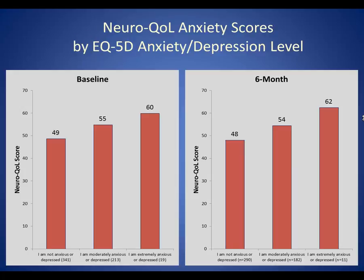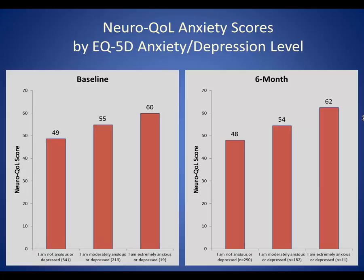Another way to examine validity is to see if a measure differentiates people categorized into groups known to differ on a similar construct. We used scores on the EQ5D to divide people into no, moderate, or severe levels of anxiety groups. Average T-scores on the Neuroqual anxiety measures were significantly different for each group, both at baseline and after six months.